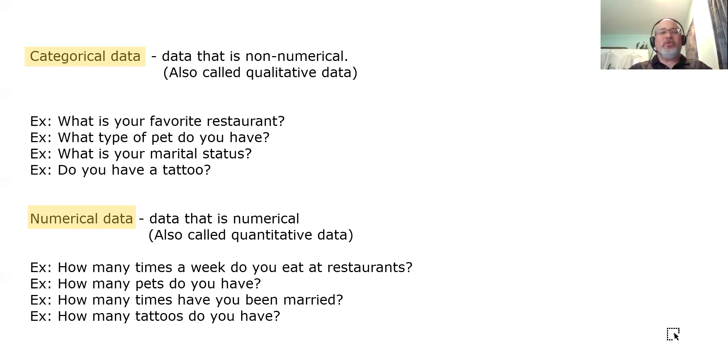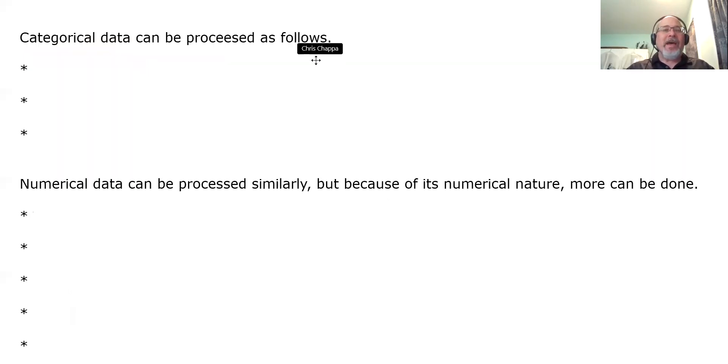Now, why do we make a distinction between types of data? Because the way you process data depends upon whether it's categorical or numerical. Categorical data can be processed as follows.